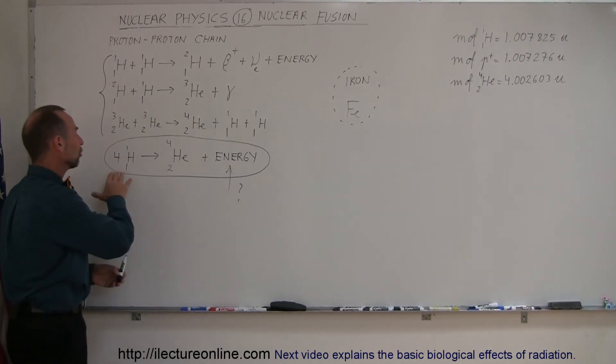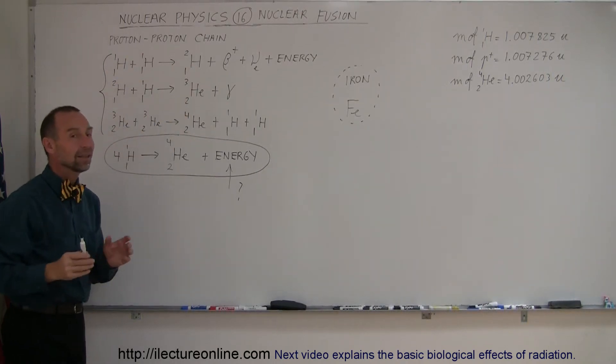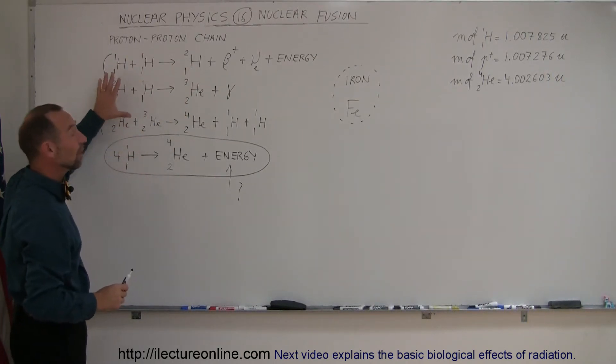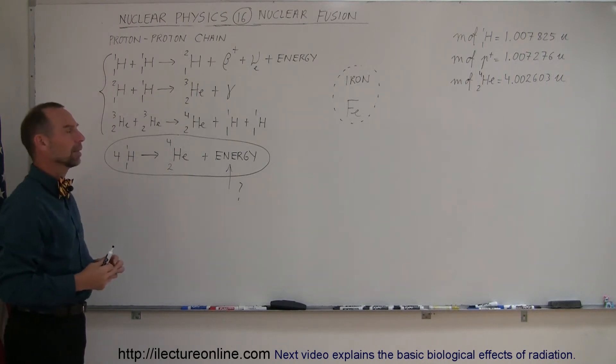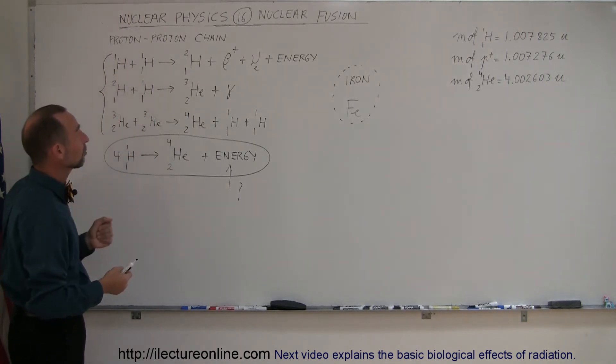Hydrogen doesn't get slammed together and turned to helium all at once—it goes through a series of processes called the proton-proton chain, and this is exactly how the sun produces energy in its center. The sun does this in its center because you need enormous temperatures of at least 10 million degrees to make this process happen.